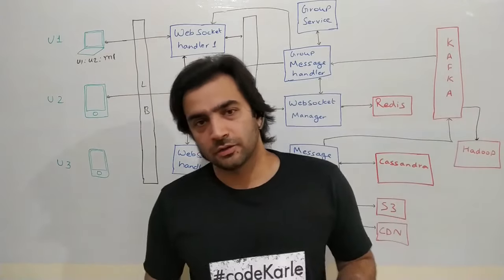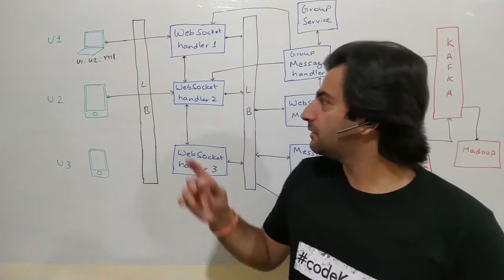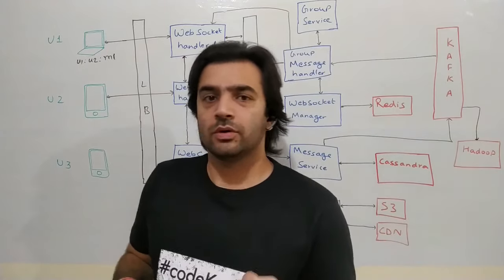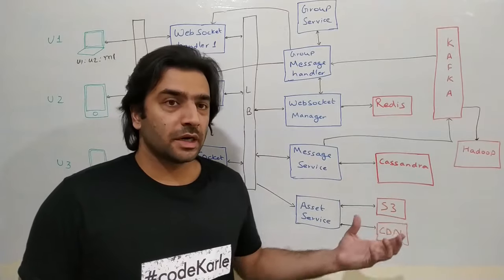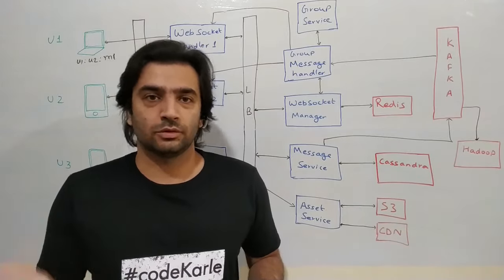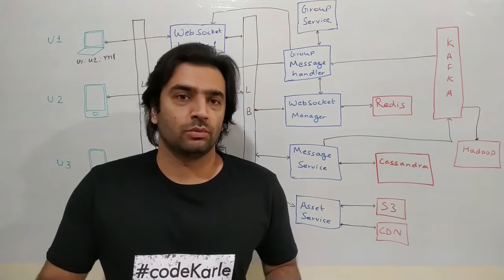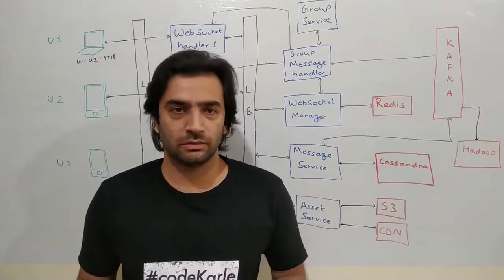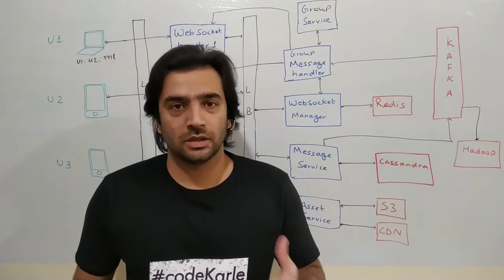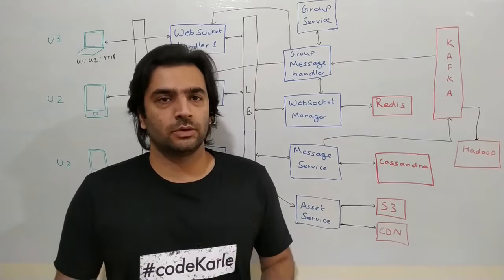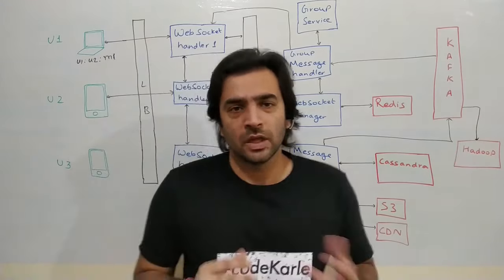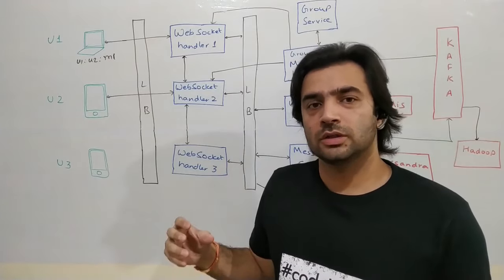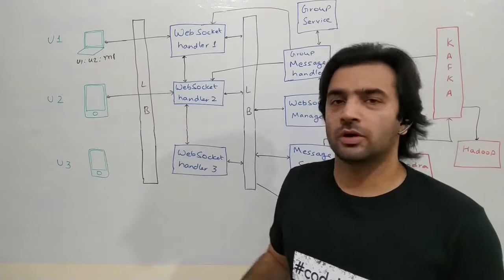For read receipts, we can store them as a status in Cassandra in the same table — starting as 'sent', moving to 'received', then 'read'. Whether to store receipts or even messages at all is a conversation to have with your interviewer. At minimum, receipts need to be stored for some time: if user1 sends a message and goes offline, receipts wouldn't go back immediately, but when user1 comes back online they'll receive them.